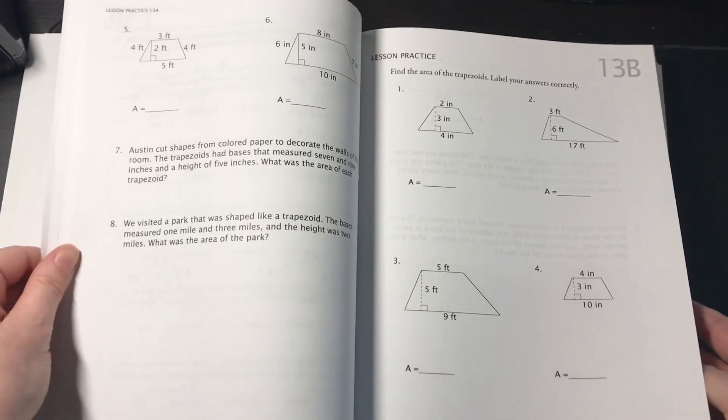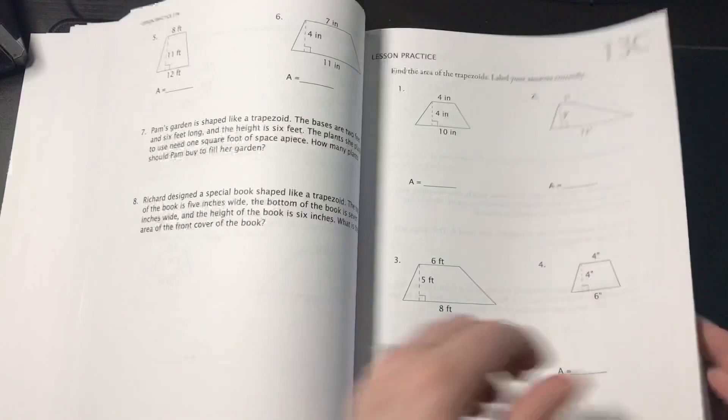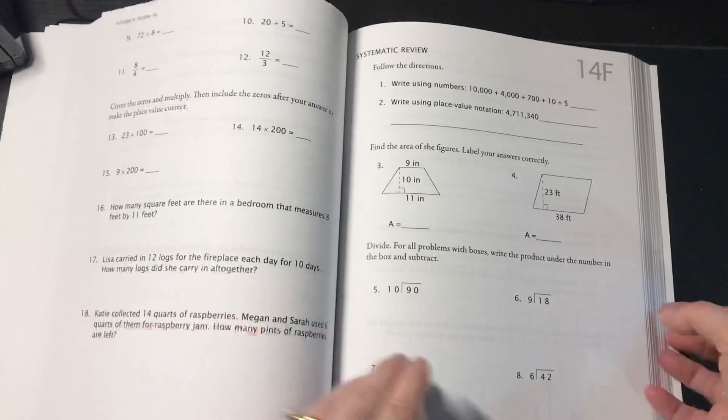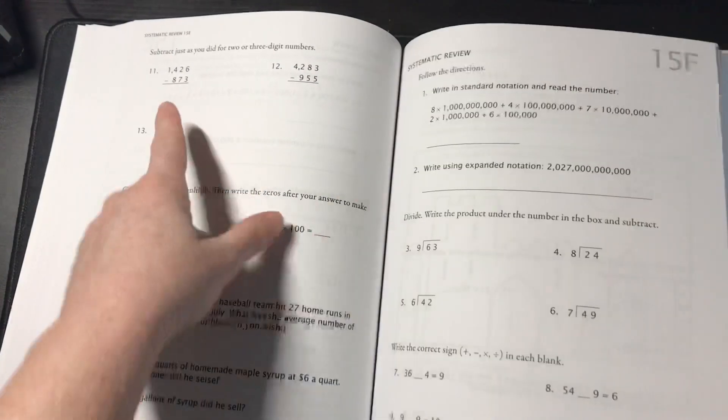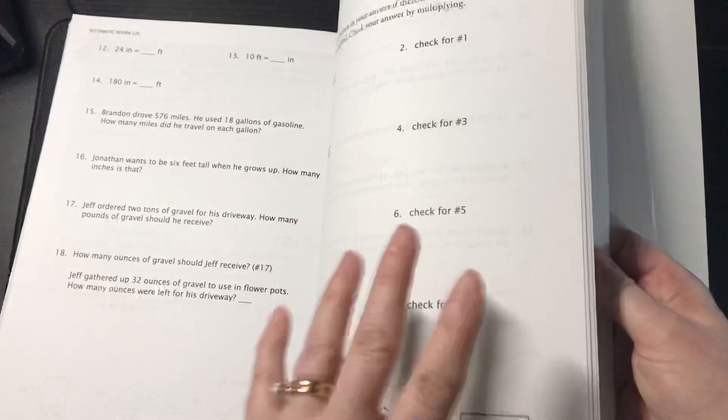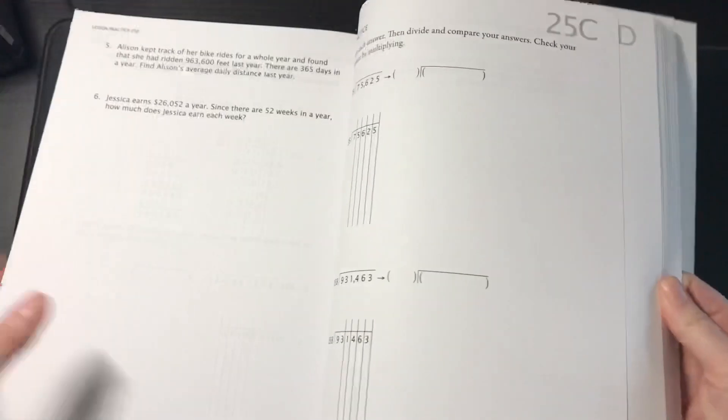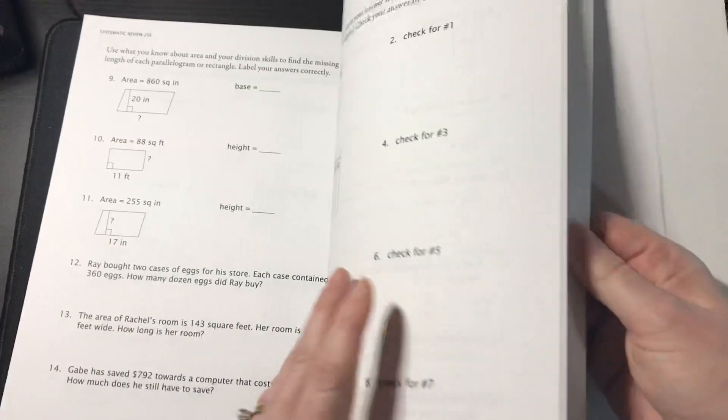So talking about area. They did a lot of area in Gamma 2, but just rectangles. So now they're going to be doing trapezoids and things like that. So even though Delta is division, it's not just division. See here, we're reviewing subtraction and multiplication.